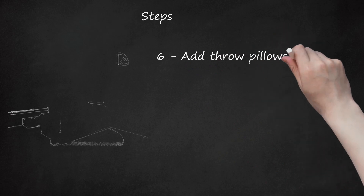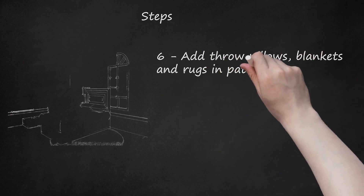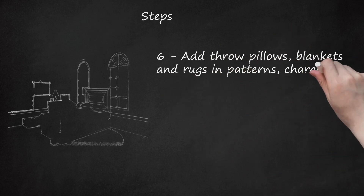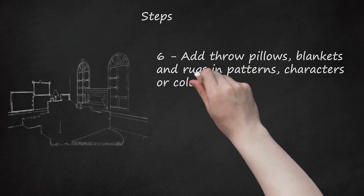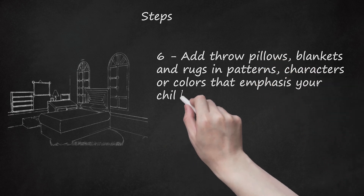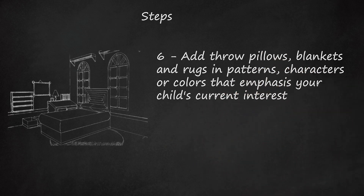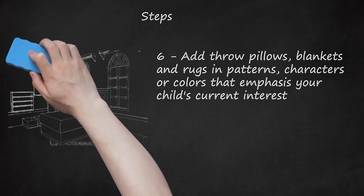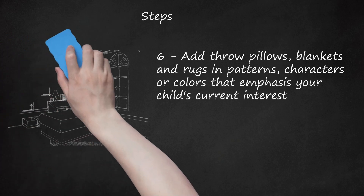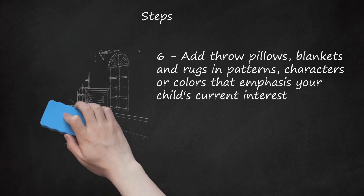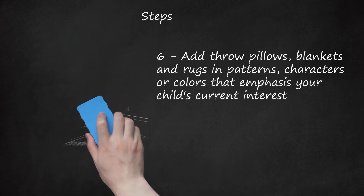Add throw pillows, blankets, and rugs in patterns, characters, or colors that emphasize your child's current interest. Make sure these items contain colors that help them tie in with the rest of the room. These items can be easily changed out as the child grows to update the room.